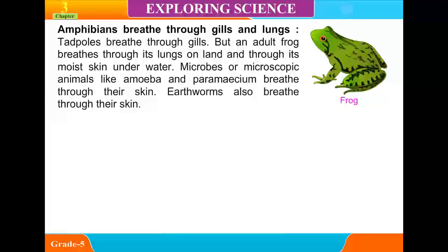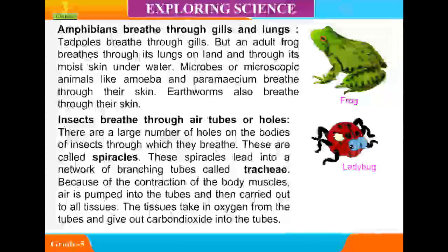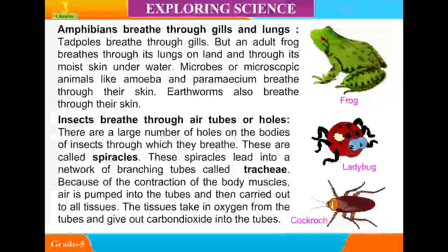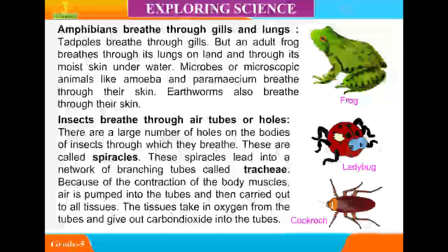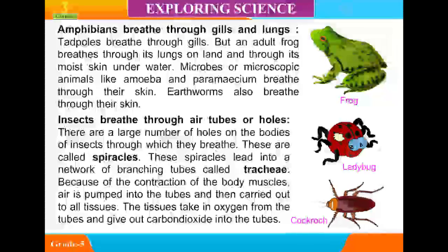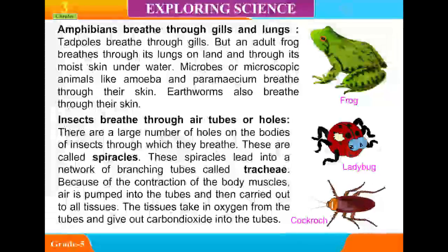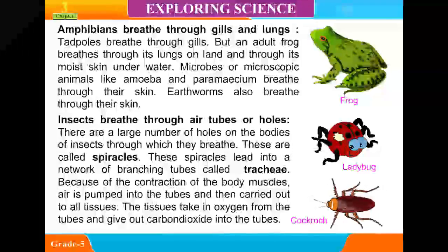Microscopic animals like amoeba and paramecium breathe through their skin. Earthworms also breathe through their skin. Insects breathe through air tubes or holes. There are a large number of holes on the bodies of insects through which they breathe, called spiracles. These spiracles lead into a network of branching tubes called trachea. Air is pumped into the tubes by contraction of body muscles and carried to all tissues, which take in oxygen and give out carbon dioxide.